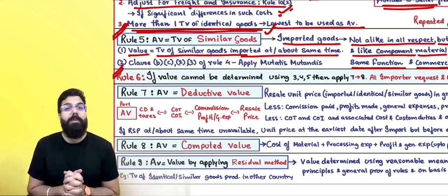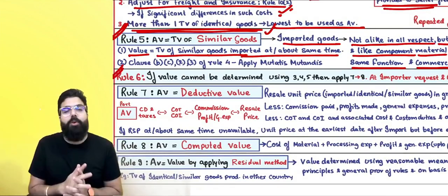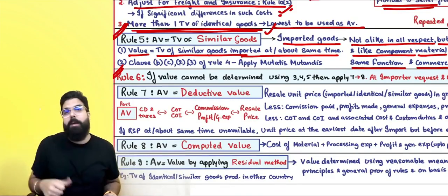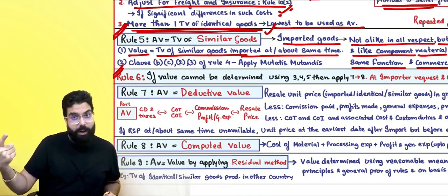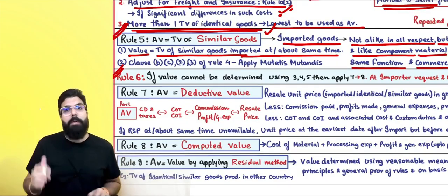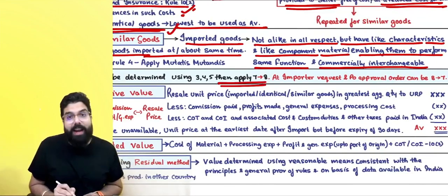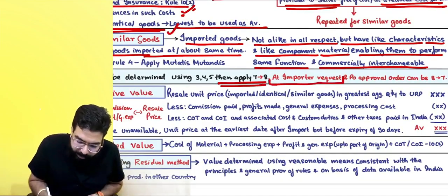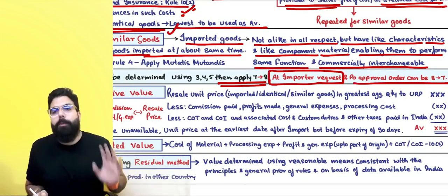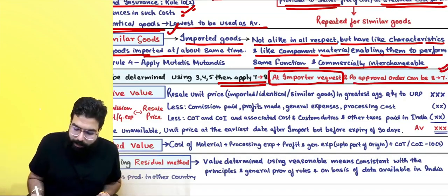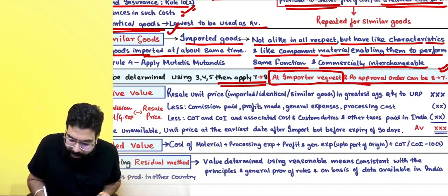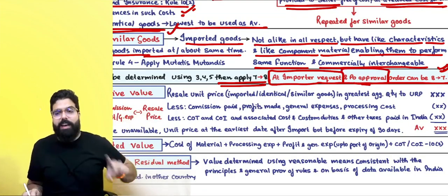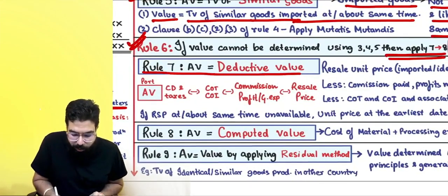Rule 6 says: if you can't apply Rule 3, 4, or 5, go ahead and apply Rule 7 and 8. An important point: at the importer's request and with proper officer approval, the order can be changed — you can apply Rule 8 first and then Rule 7.